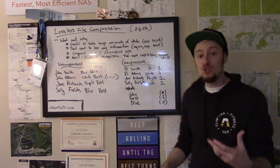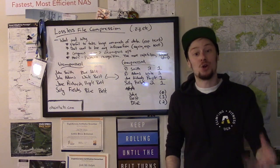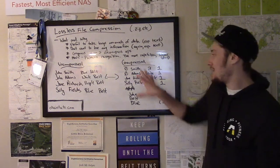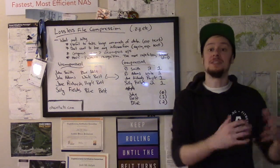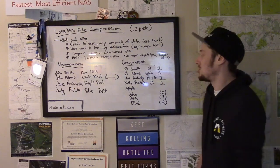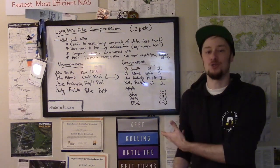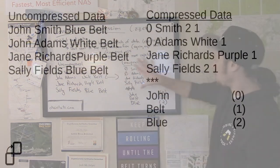We also have to store our lookup table, because otherwise we wouldn't know when we do our decompression step how to turn zero back into the original word. So we have our compressed data set, and at the bottom of our file we have a lookup table — a list that's John, belt, and blue. And we're going to use the index of the words in that list: zero, one, and two for our lookup table.